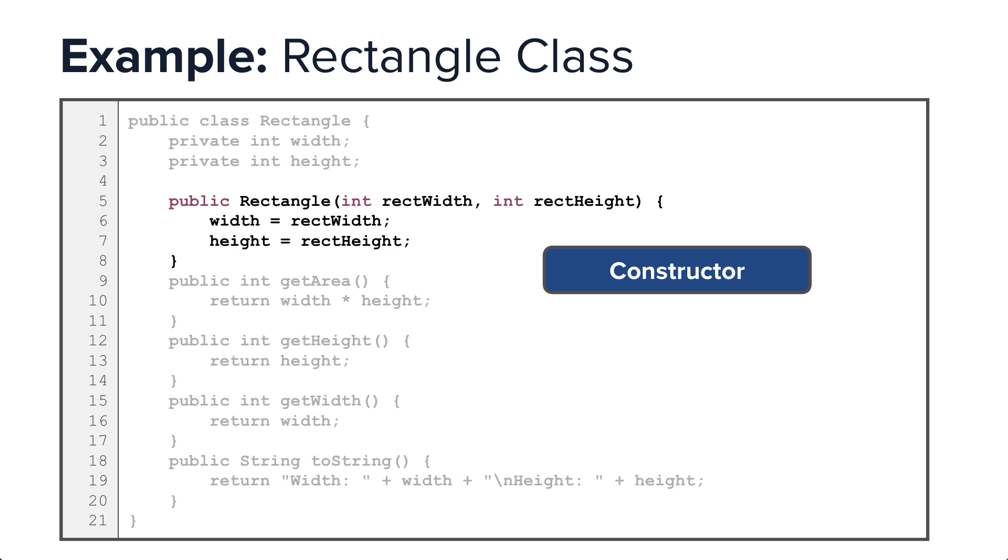And finally, the constructor. The constructor is the object factory of the class. It is called every time a new rectangle object is created in another class. It is where the attributes, in this case width and height, receive their unique set of values. Let's take a closer look at its signature.